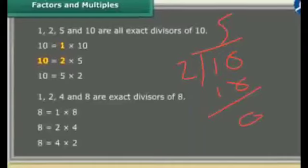If we divide 10 by 5, it means 5 goes into 10 two times, remainder is 0. So 1, 2, 5 and 10 completely divide 10.